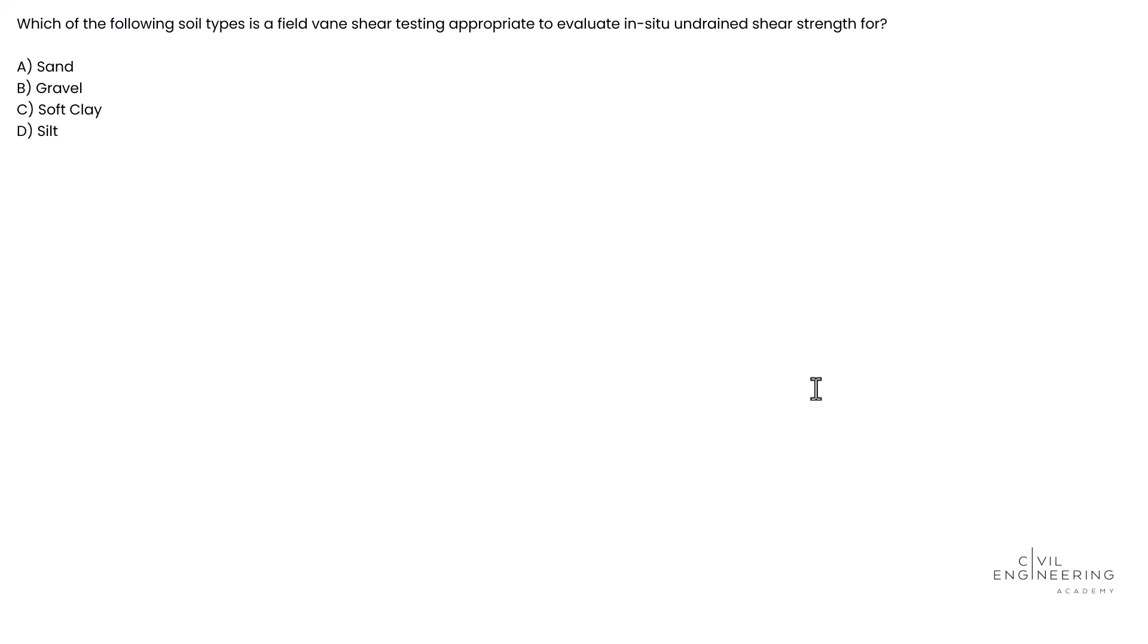Today we're solving a geotech problem that falls under site characterization under field vane shear. So we want to check this out and talk about it. The question is simple, but it basically says, which of the following soil types is a field vane shear test appropriate to evaluate in-situ undrained shear strength for?